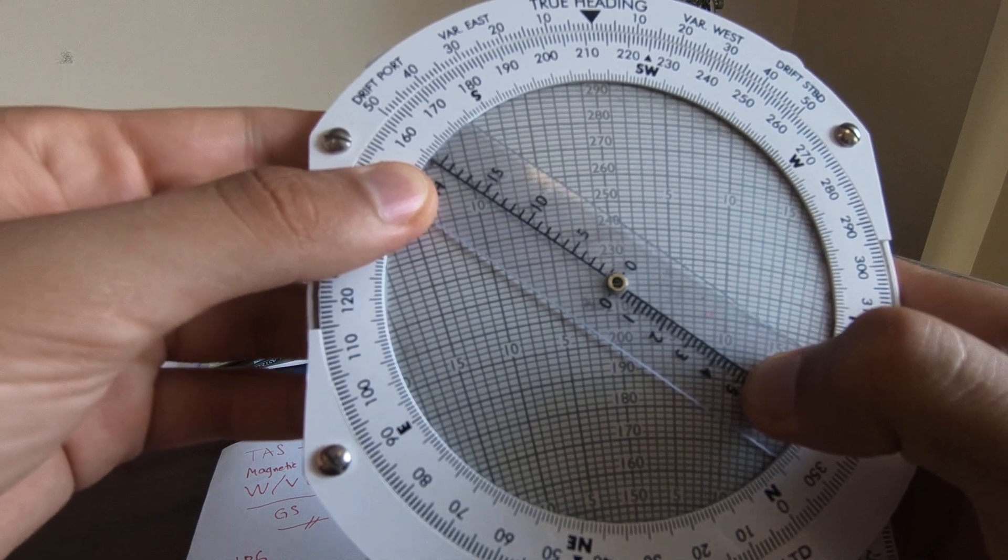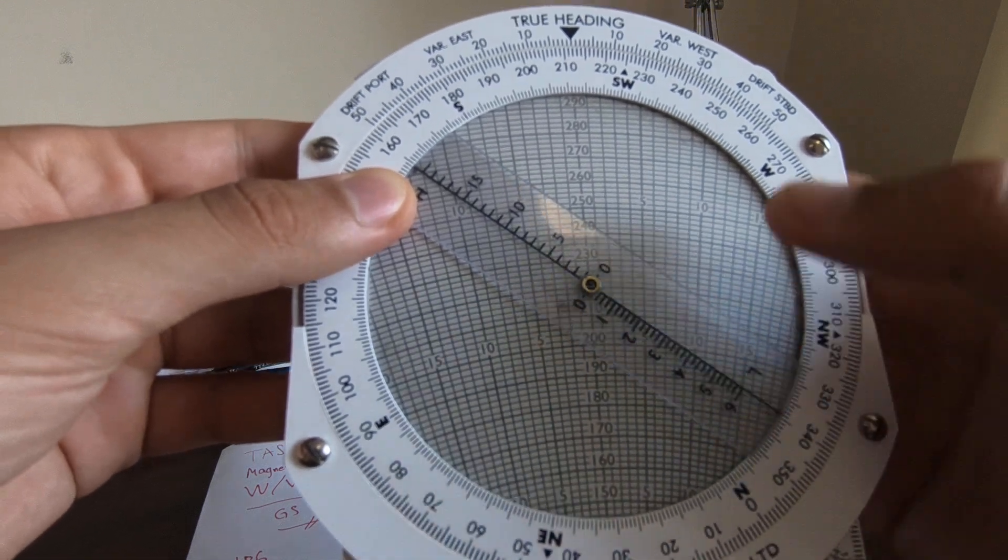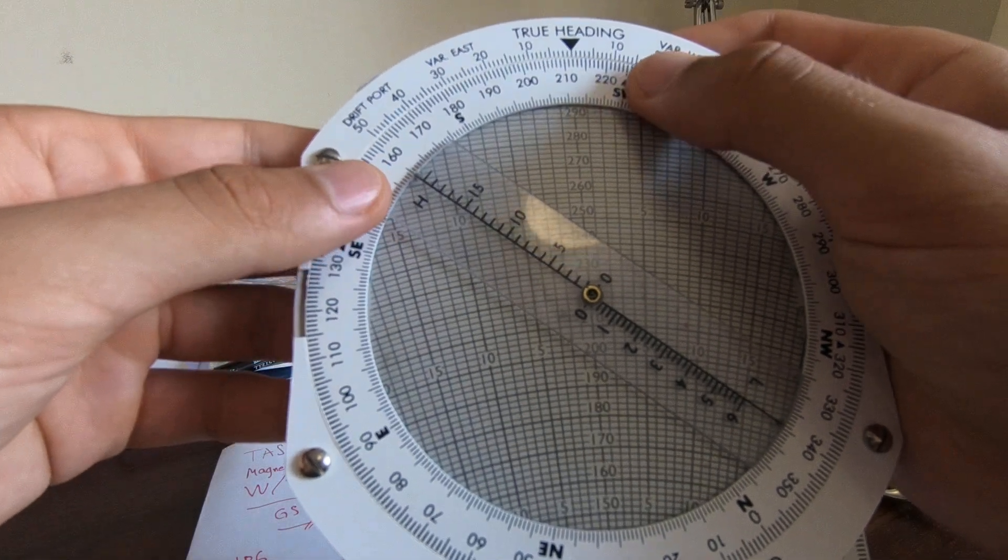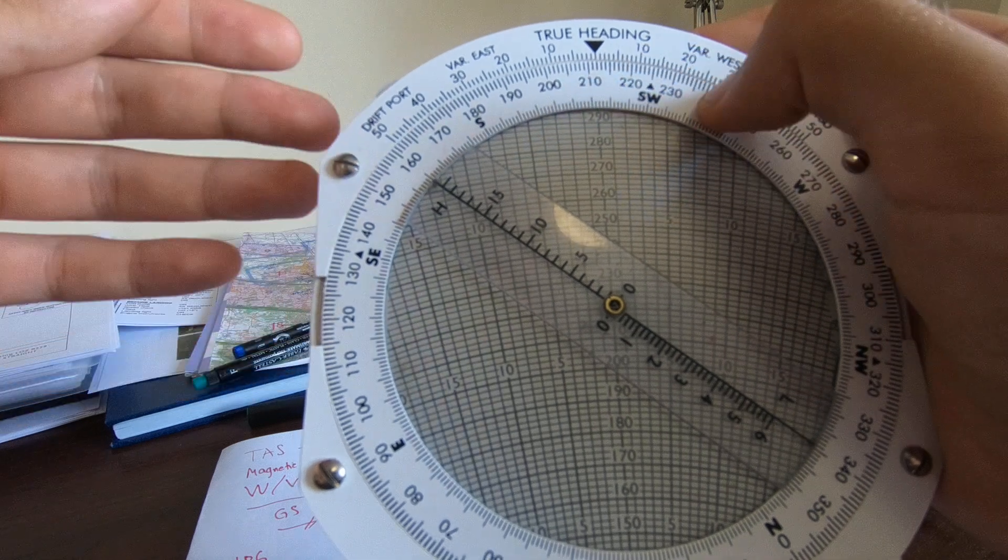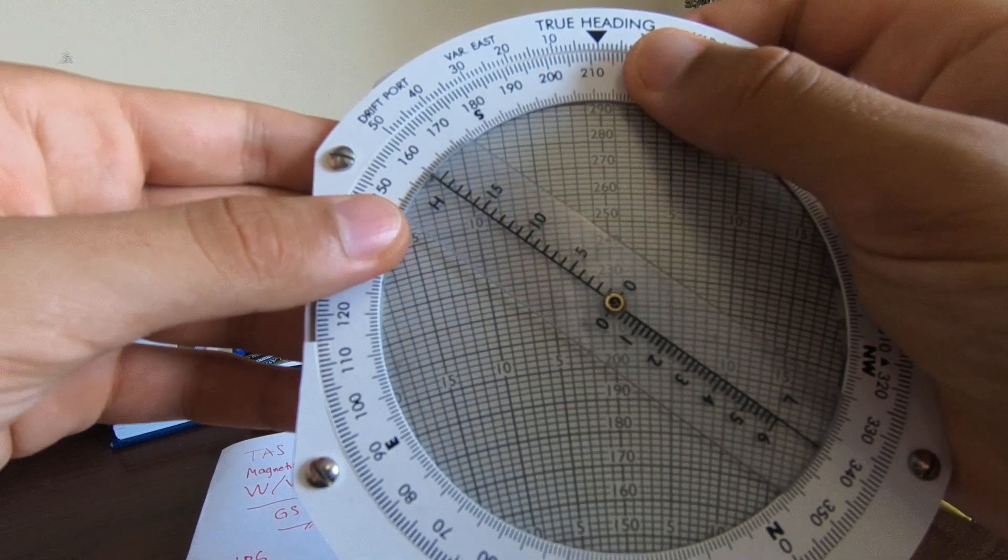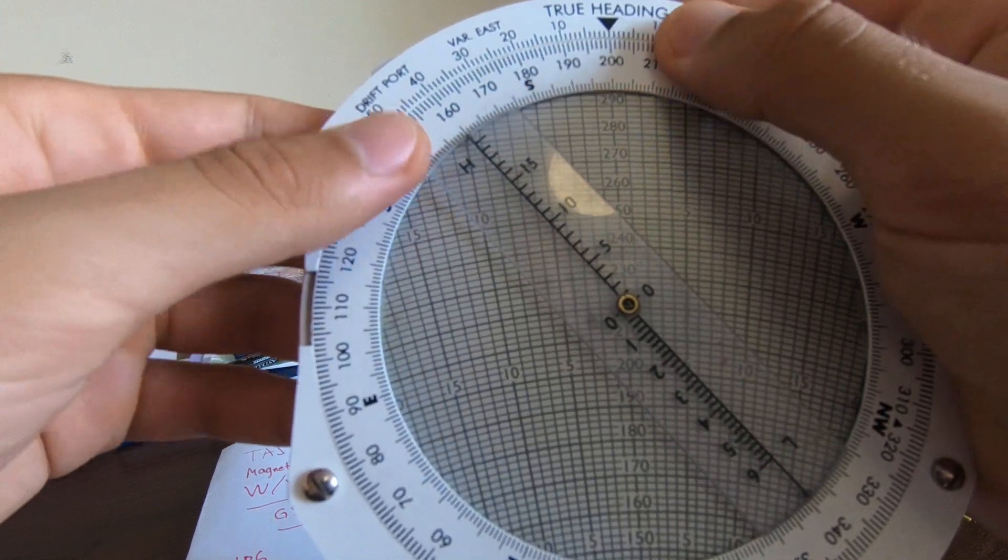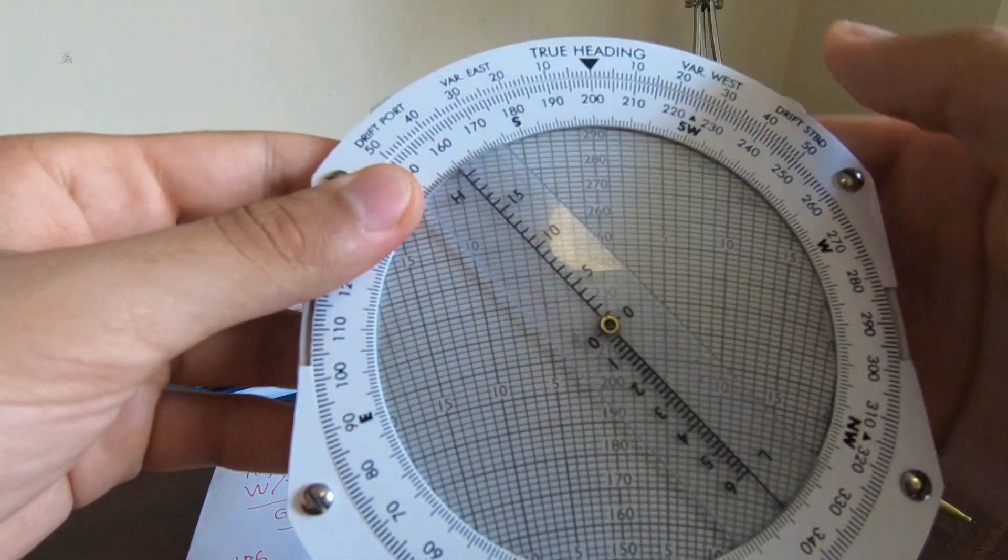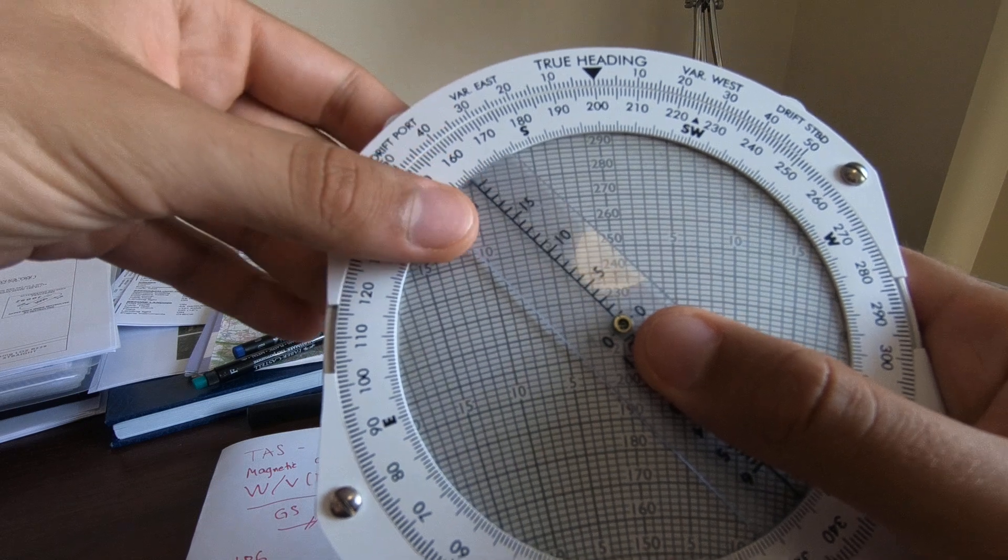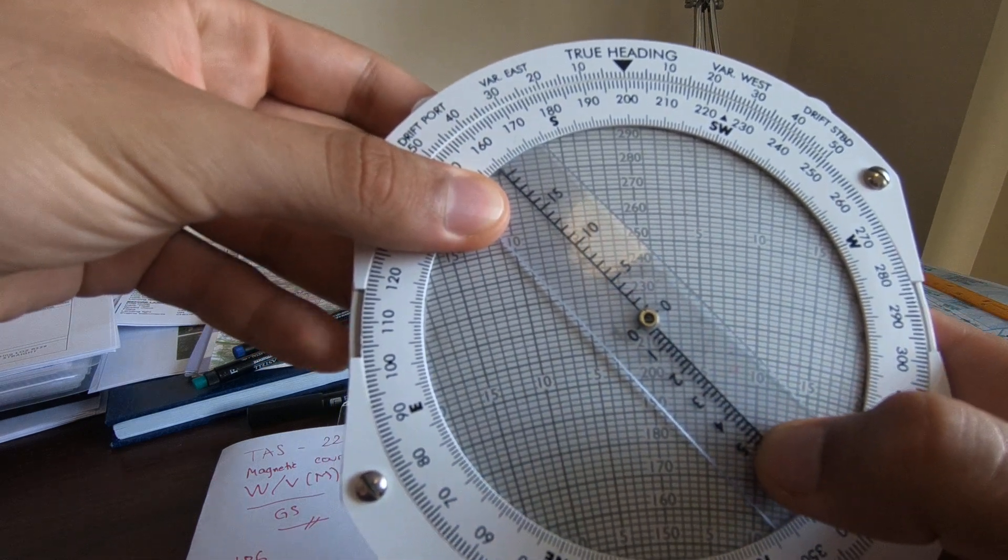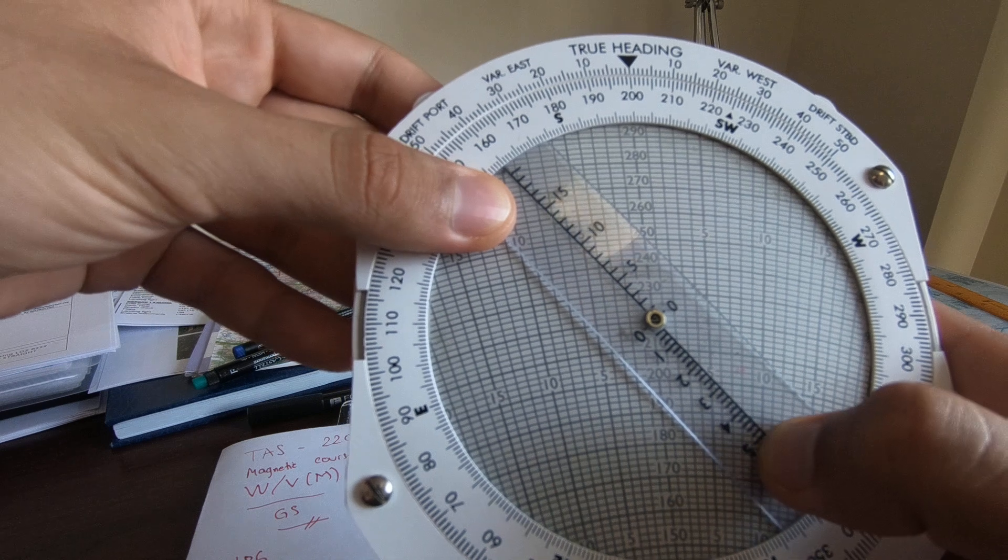So that means the heading must be put 12 to the left. So we have 212, and then we have to put it here to 200. So as soon as we have here 200, then we can read the ground speed, which is 186.